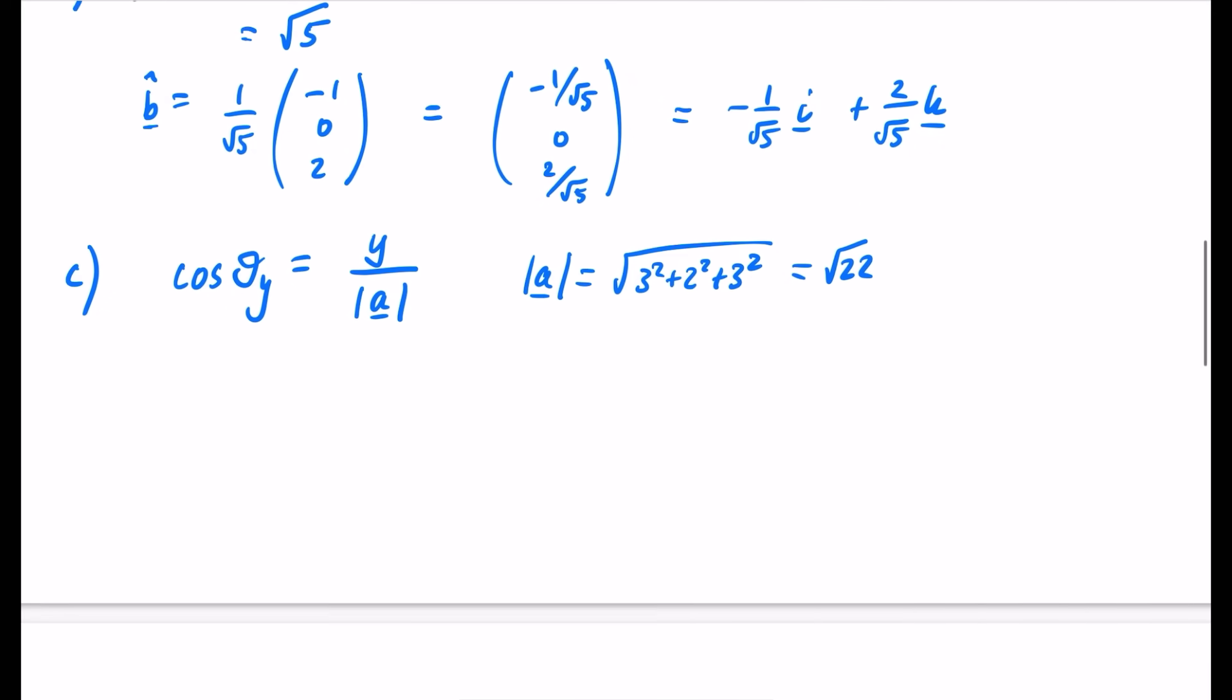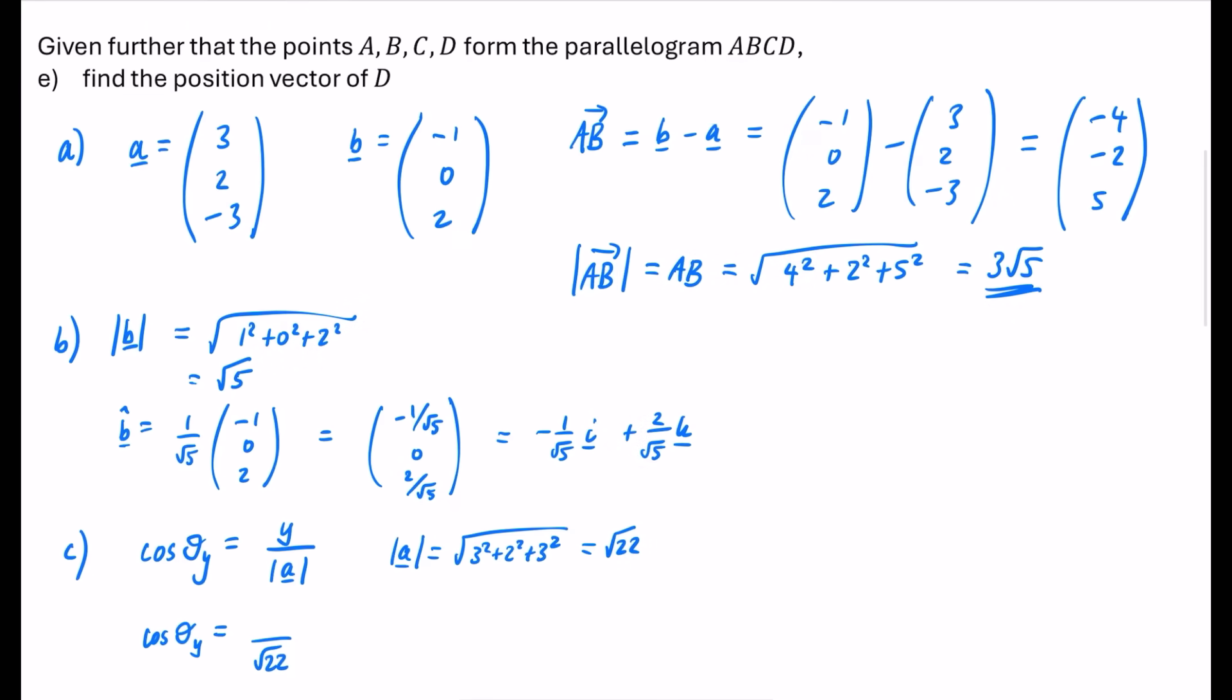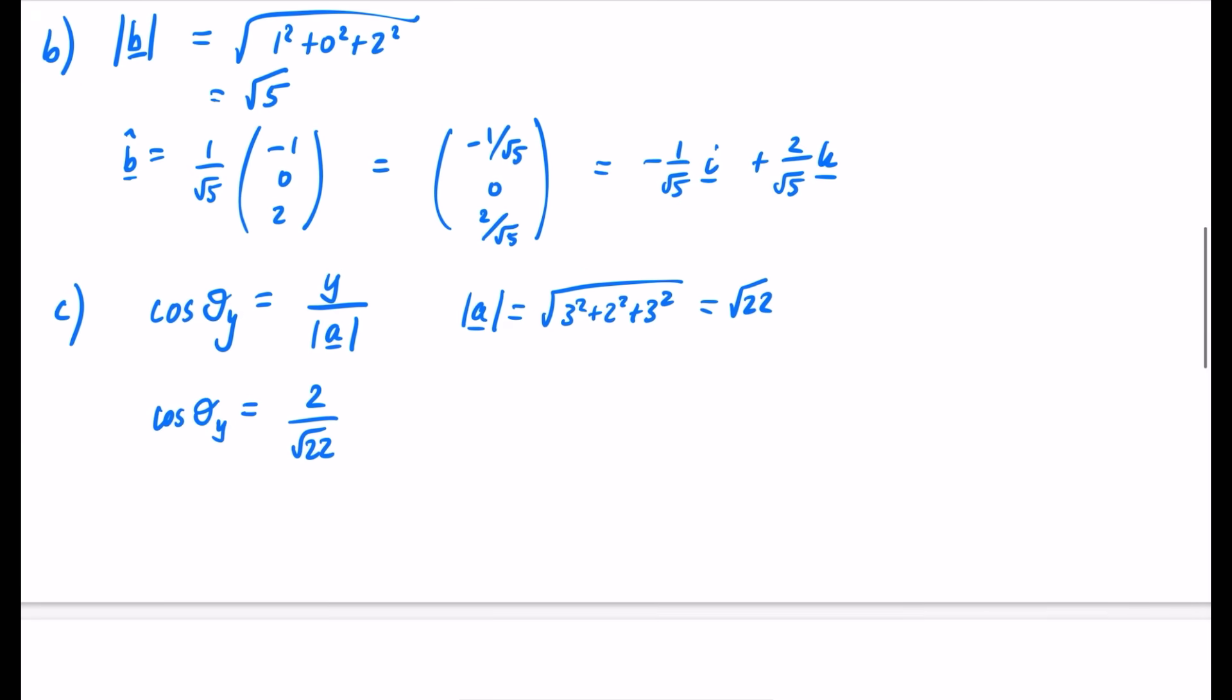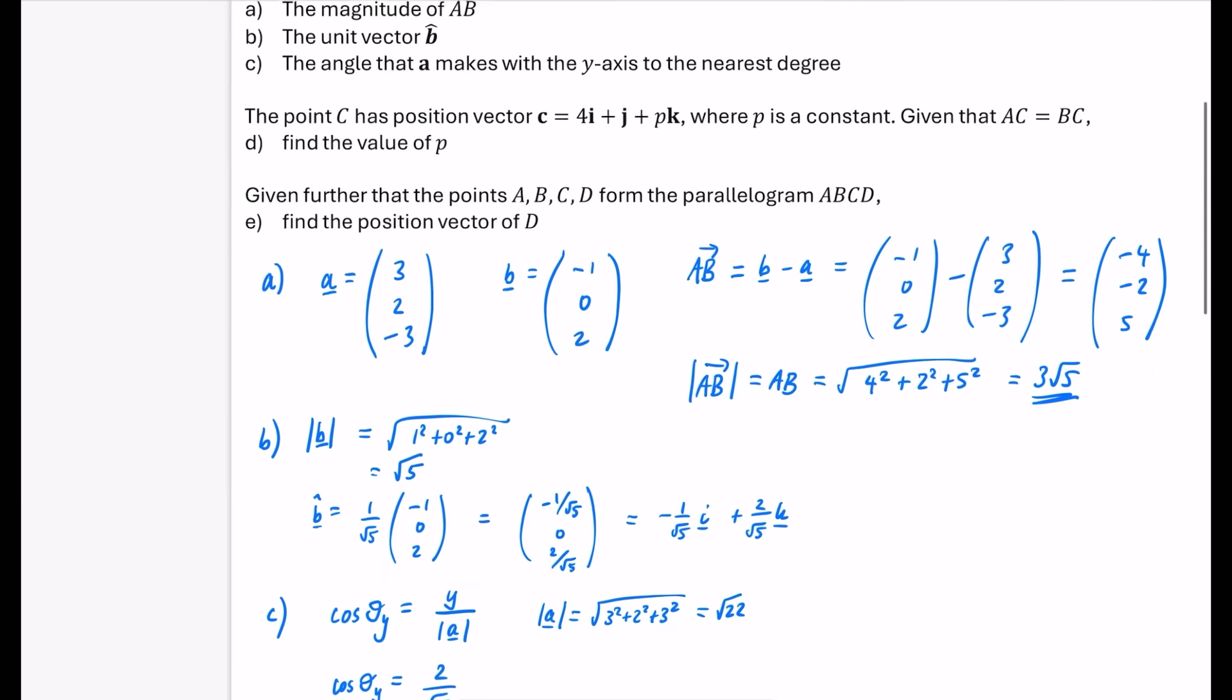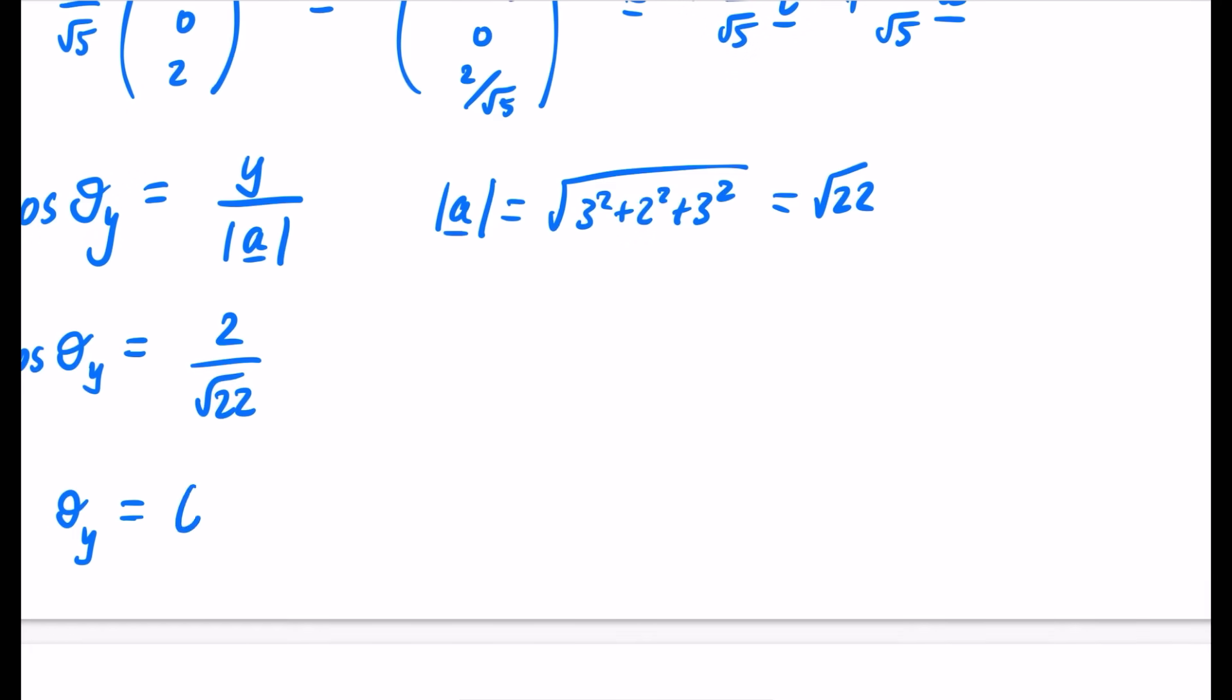So this means that the cos of theta y, the angle it makes with the y-axis, it's going to be something over 22. And what was the y-coordinate? The y-coordinate is 2. So it's the 2 over the square root of 22. So I'll just find out what theta y is. I think I want it in degrees mode. My calculator is in radians, so I'm just going to switch it back to degrees. So I will do 2 divided by the square root of 22. I will do the inverse cos of that answer. I think it wanted it to the nearest degree it did. So it's 64.76, which is 65 degrees that it makes to the nearest degree.